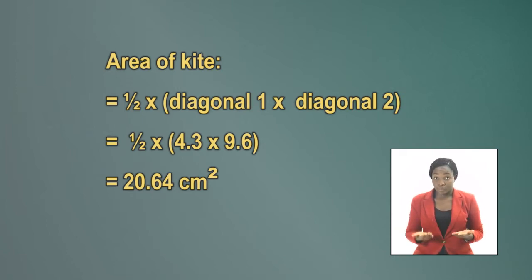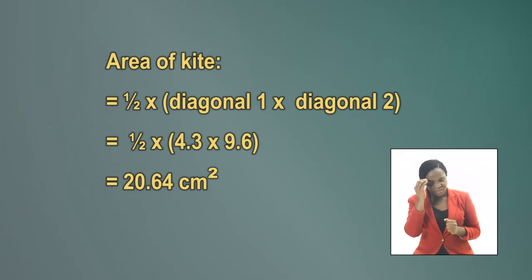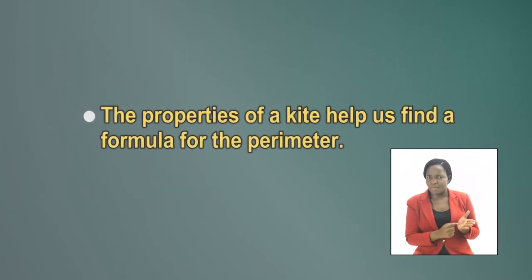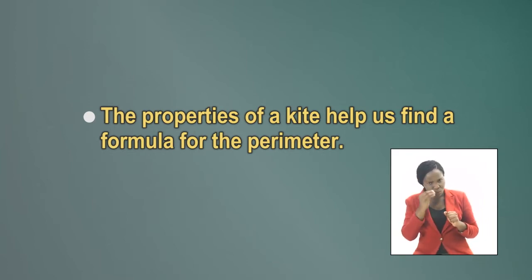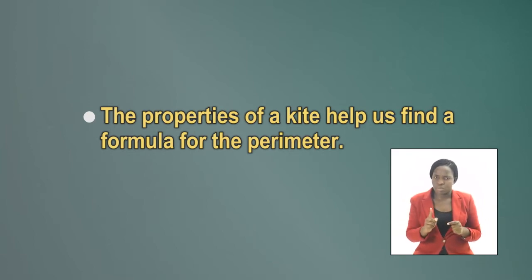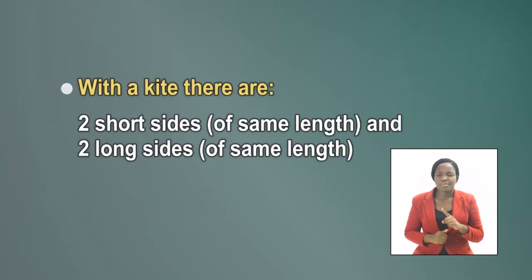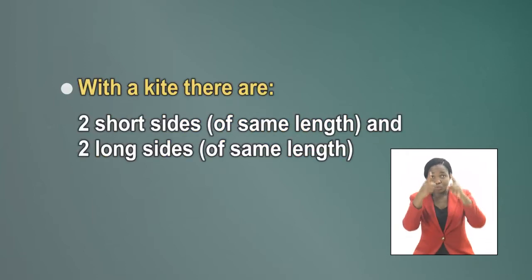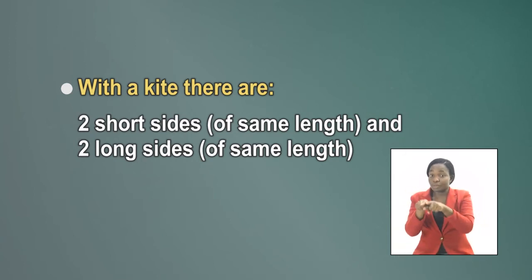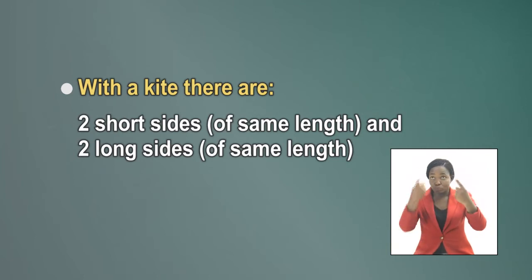Now we just have to find a formula for the perimeter. And to do that, we must first look at the properties of the kite — it would help us find a formula for the perimeter. We have two short sides and two long sides. The short sides are equal and so are the long sides. So we have two short sides of the same length and two long sides of the same length.